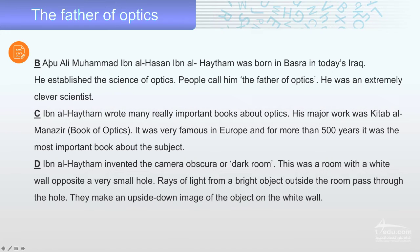Abu Ali Muhammad Ibn al-Hasan, Ibn al-Haytham, was born in Basra, in today's Iraq. He established the science of optics. People called him the father of optics. He was an extremely clever scientist.